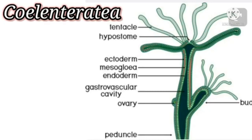The body wall is diploblastic. What is diploblastic? The organism has two layers — an outer ectoderm and an inner endoderm. The outer ectoderm and inner endoderm are separated by a non-cellular jelly-like substance called mesoglea. It has a central gastrovascular cavity called the coelenteron, with a mouth surrounded by short tentacles.